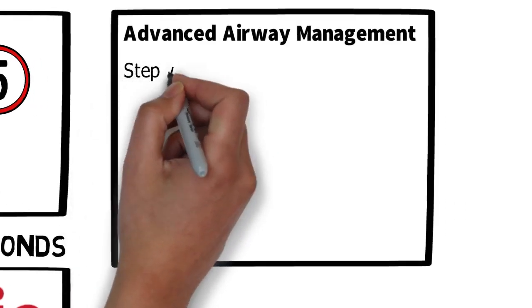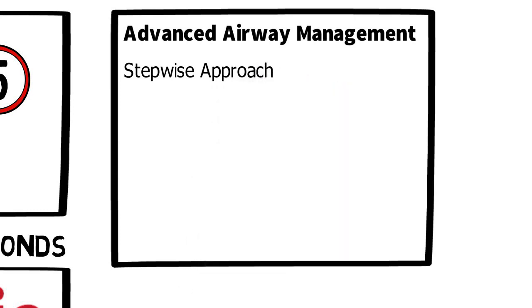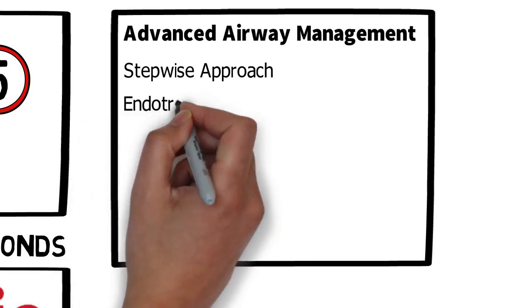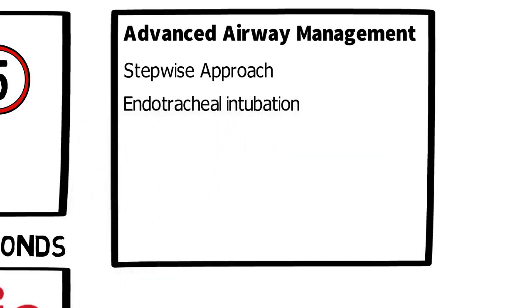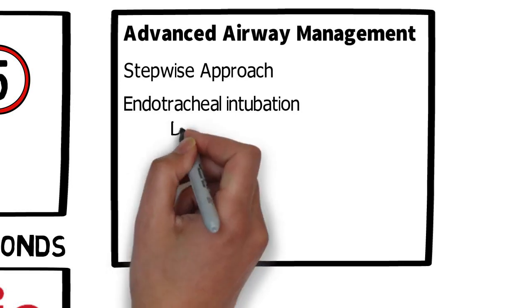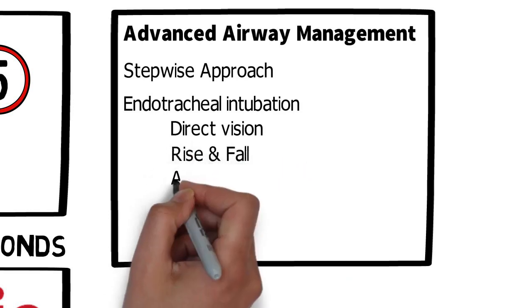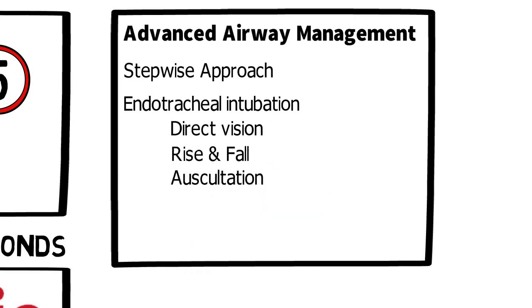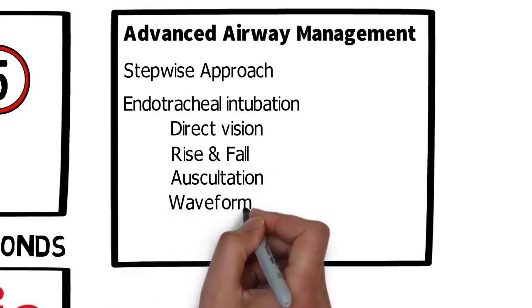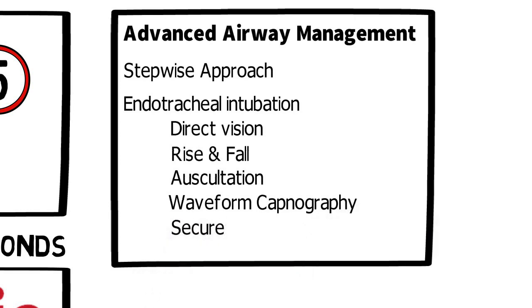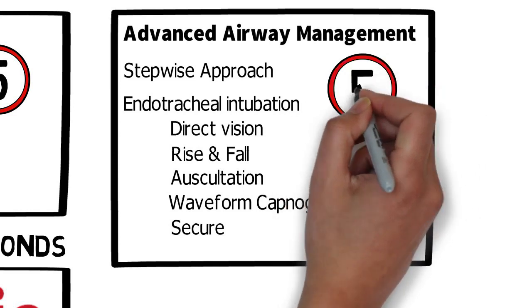Moving on to advanced airway management, key principles include a stepwise approach: starting with simple manoeuvres like a head tilt chin lift or jaw thrust, moving on to an OPA, then considering an NPA, iGel, or endotracheal intubation where appropriate. For endotracheal intubation we'll look for the tube inserted under direct vision, rise and fall of the chest, bilateral auscultation and over the epigastric region, waveform capnography, and the tube secured. No interruption of longer than five seconds of CPR at any point.